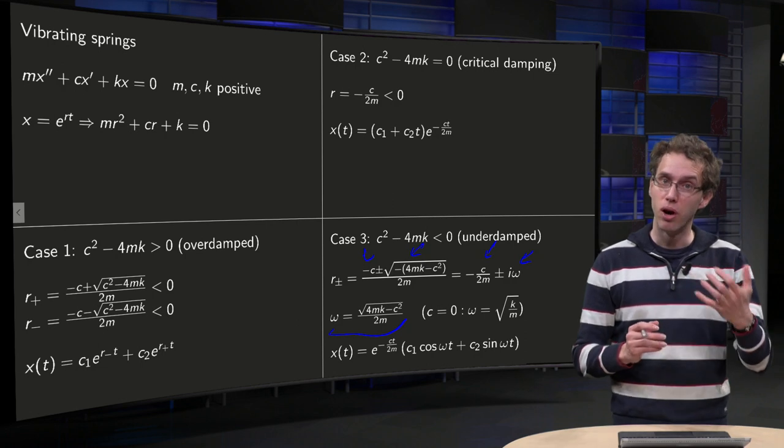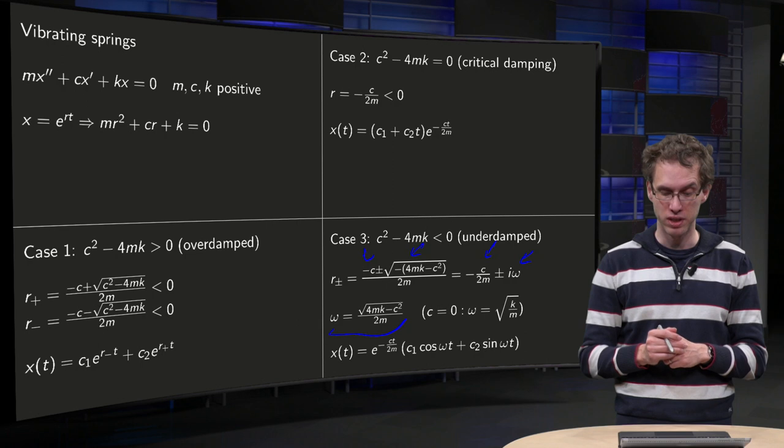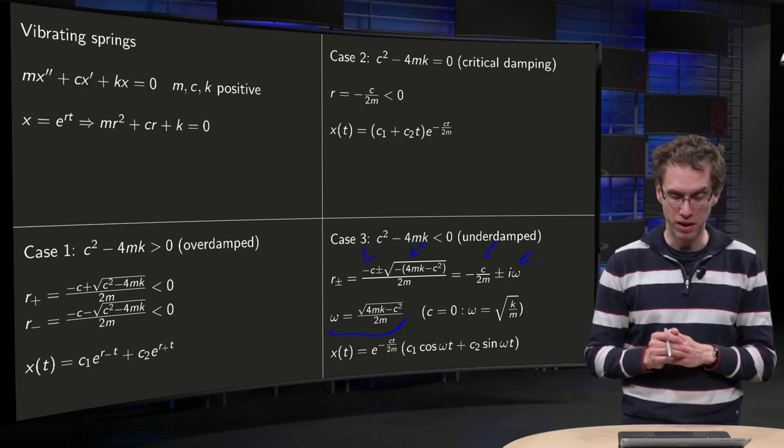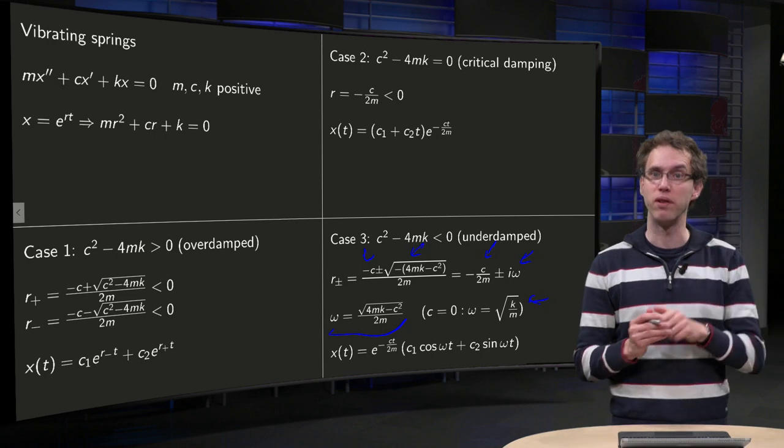So that's where omega is this expression over here. And notice your omega corresponds to the omega we saw before in the c equals zero case. Because if you set c equals zero, you find omega equals square root k over m, which is the same omega we saw already before.